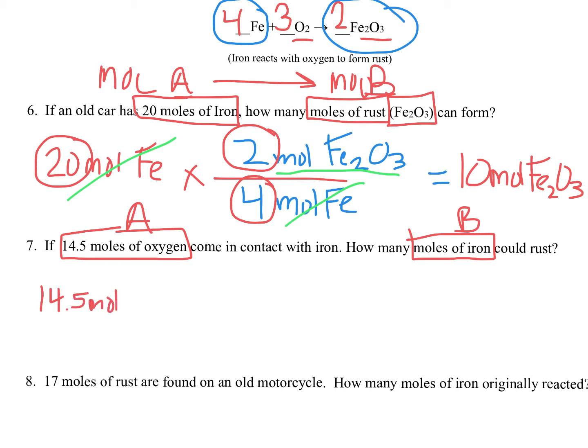14.5 moles of oxygen. Oxygen is O2 in the balanced equation above. I need to get rid of moles of oxygen. So I know I'm going to put that on the bottom. And I'm looking to solve for moles of iron. So I'm going to put moles of iron on top. To get my numbers for those conversions, I'm just going to look on my balanced equation. And let's see where we're at.